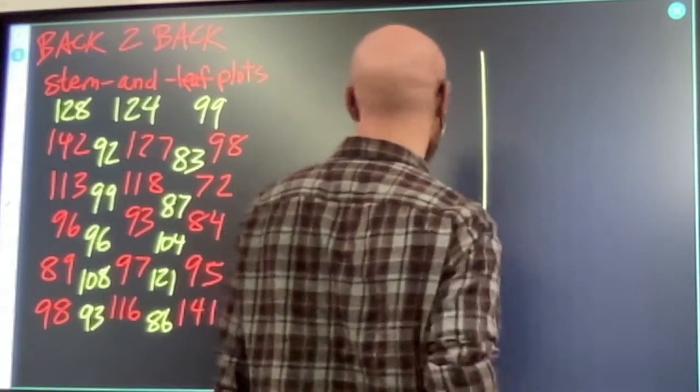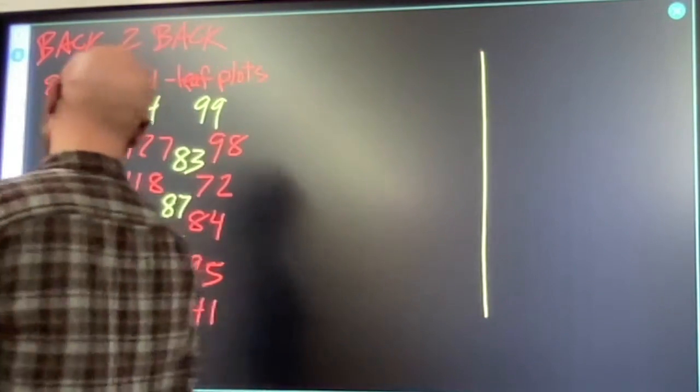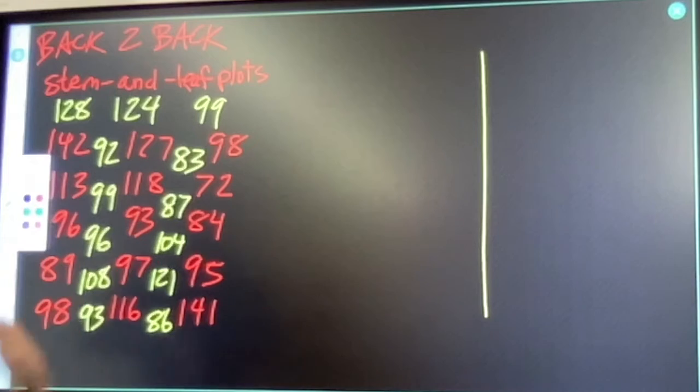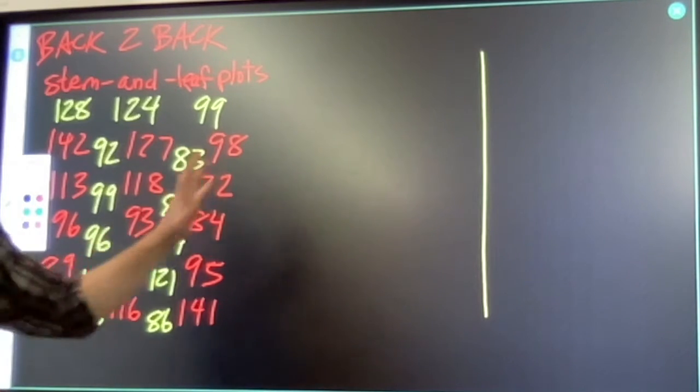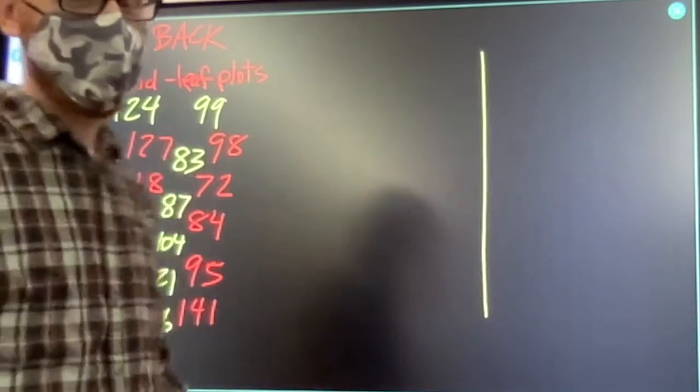Make a normal stem and leaf plot with one set of your numbers. That will involve a stem. First, find your biggest number in either set.